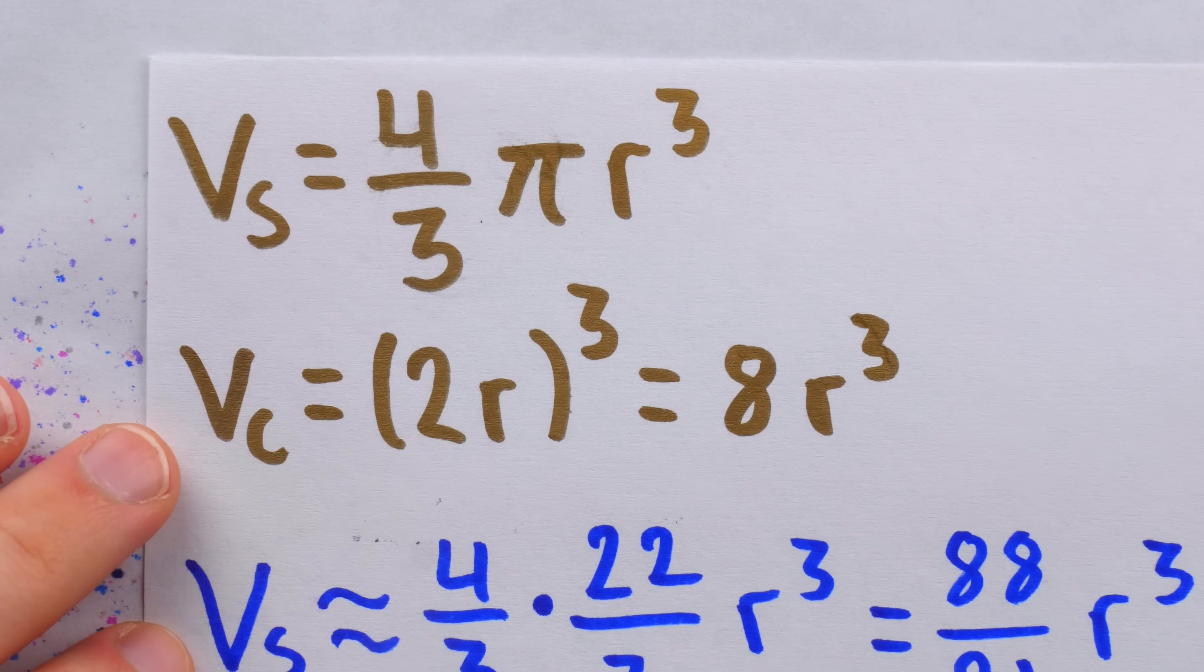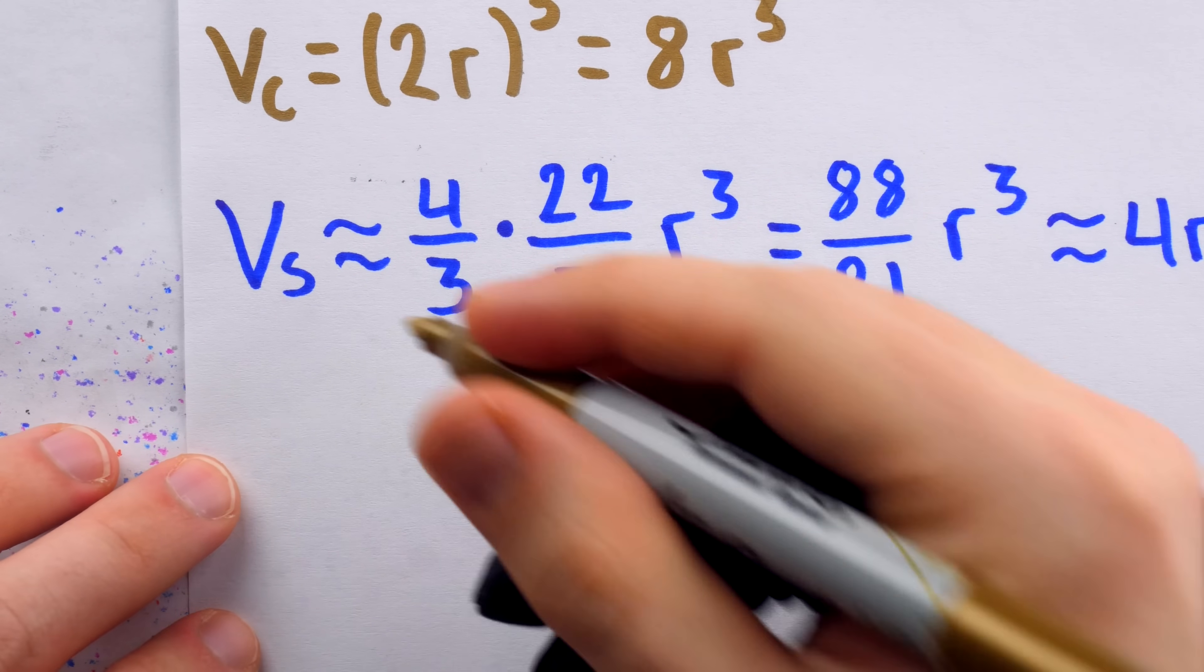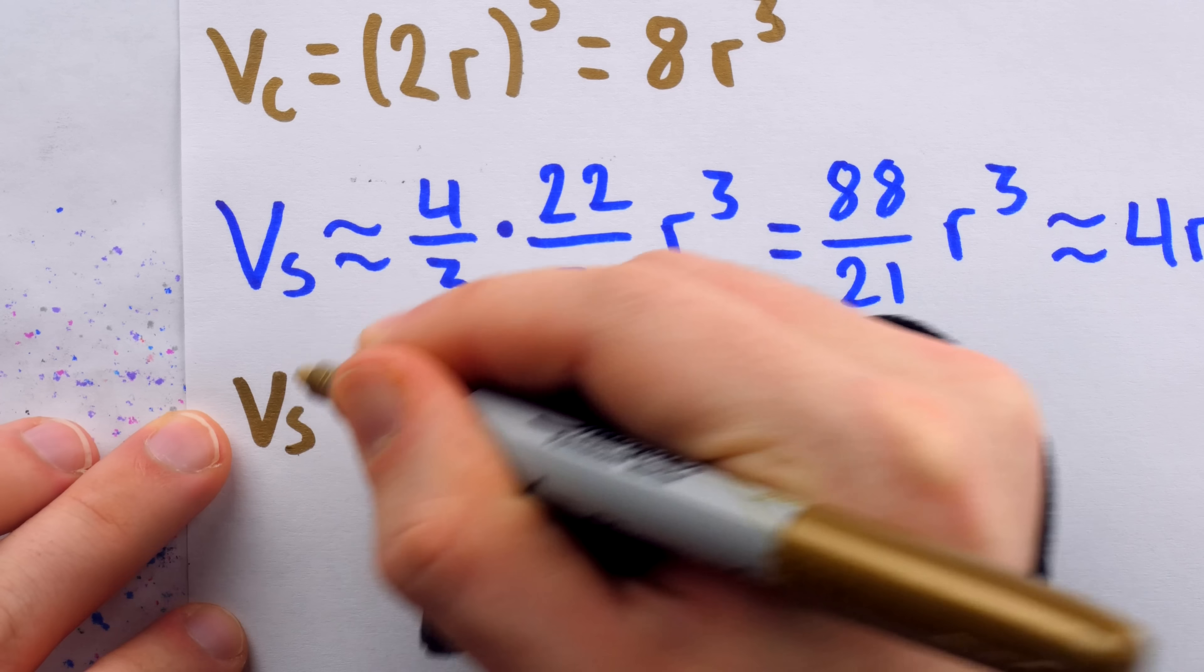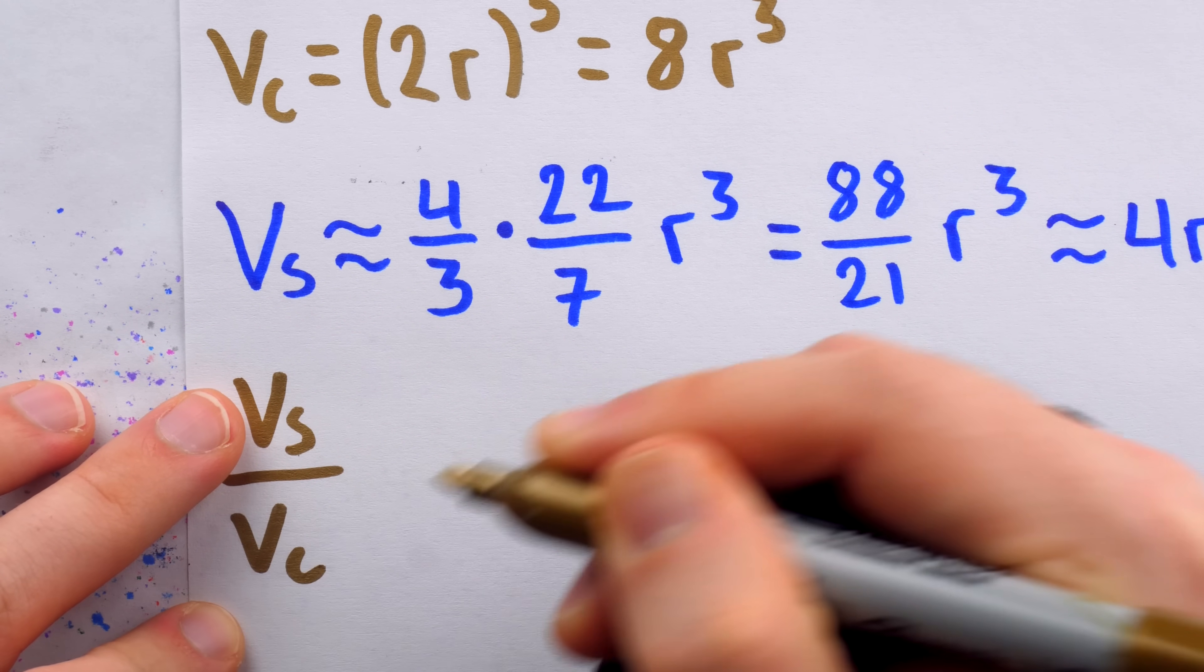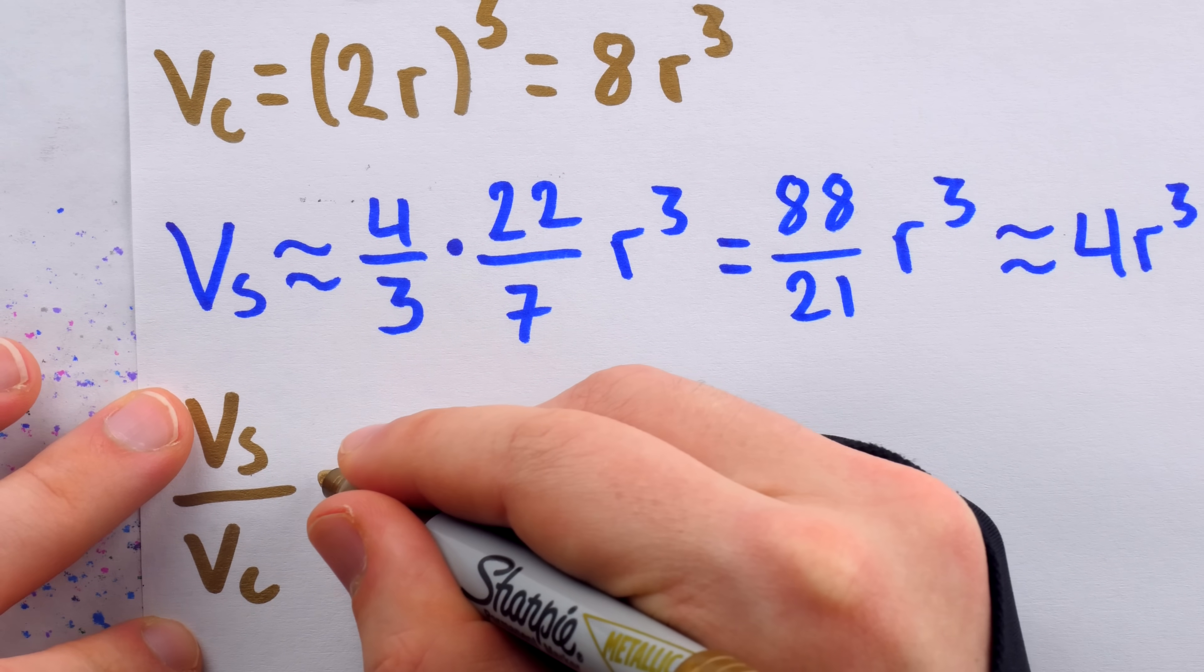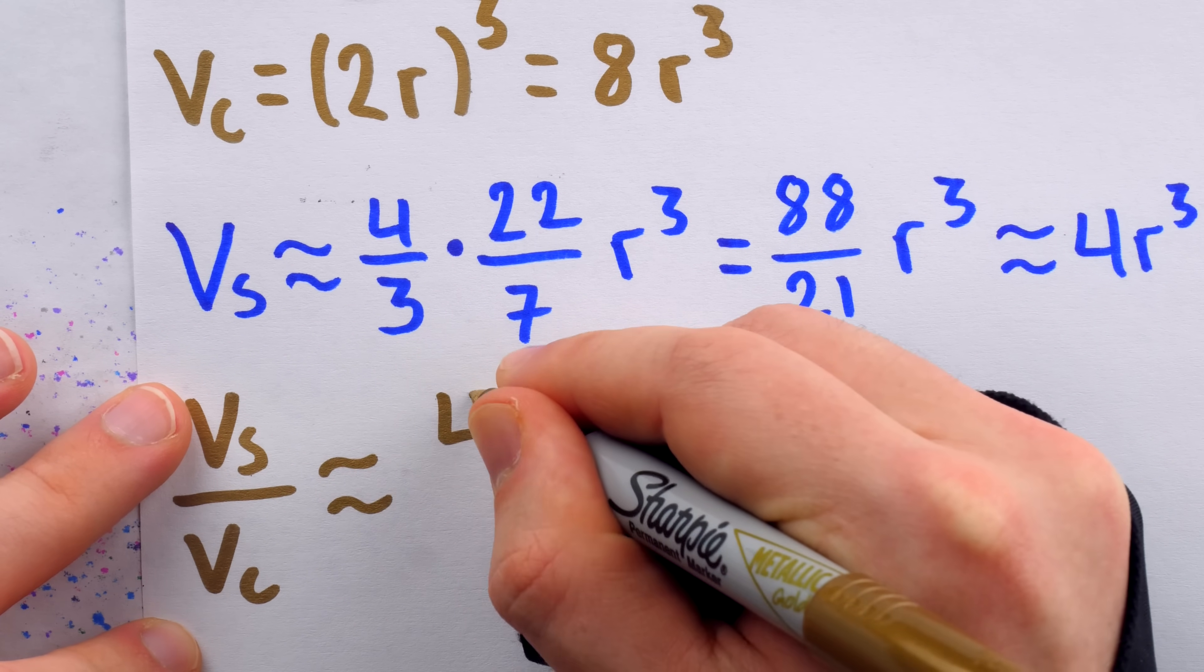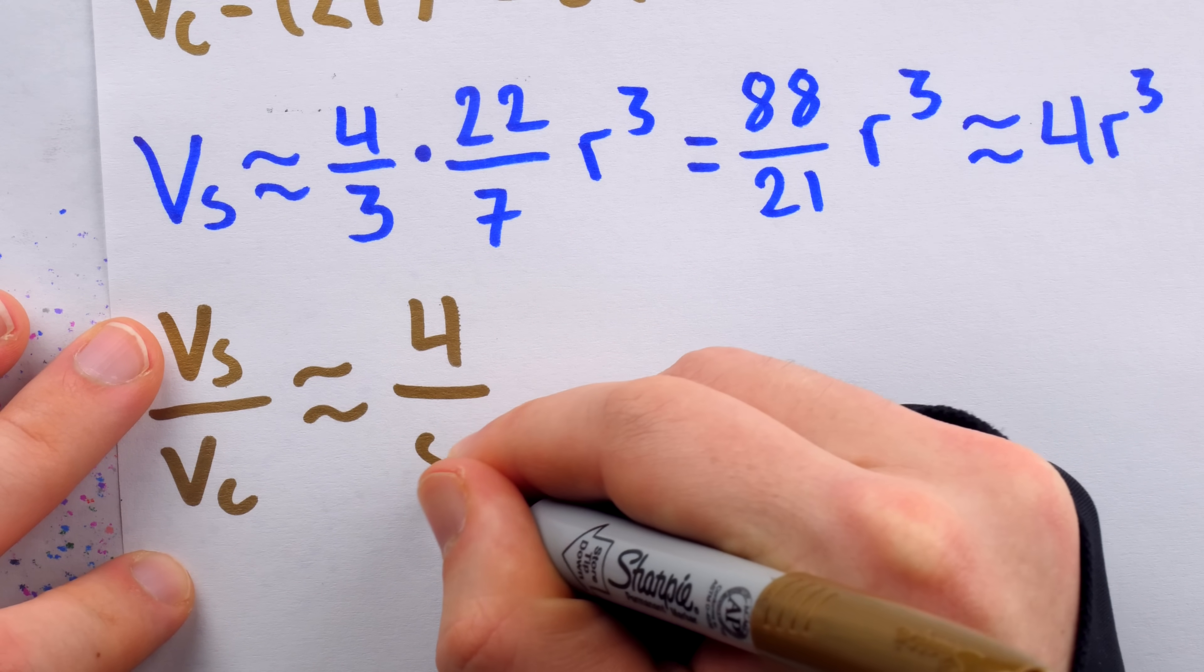The ratio we're really interested in is how the volume of the sphere compares to the volume of the cube. The volume of the sphere divided by the volume of the cube, the r cubes would cancel out, and so our approximation is that it would be about 4 over 8, or about 1 half.